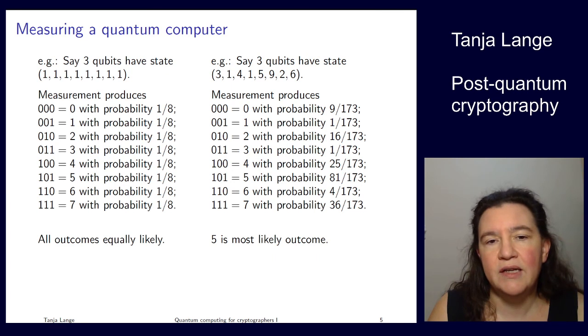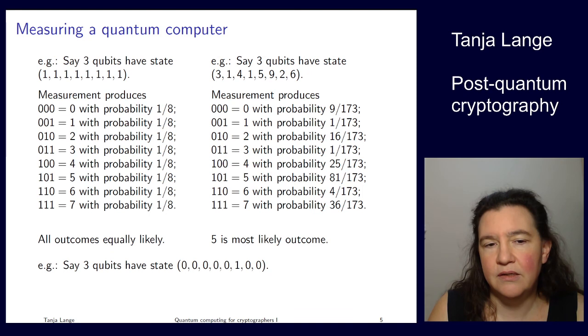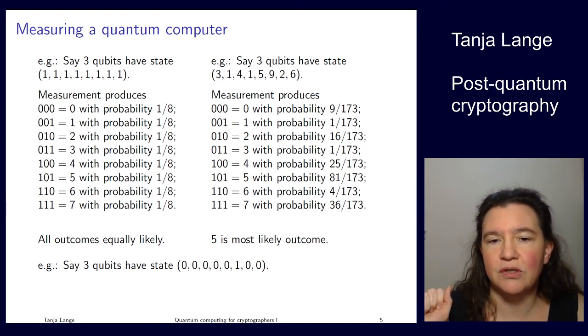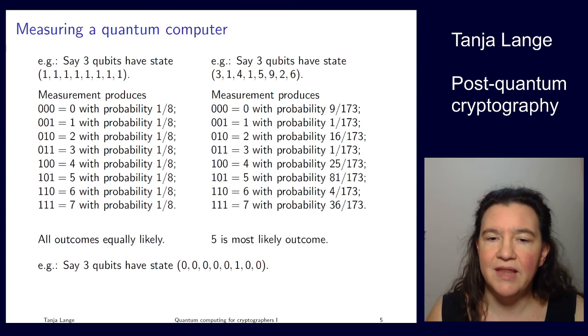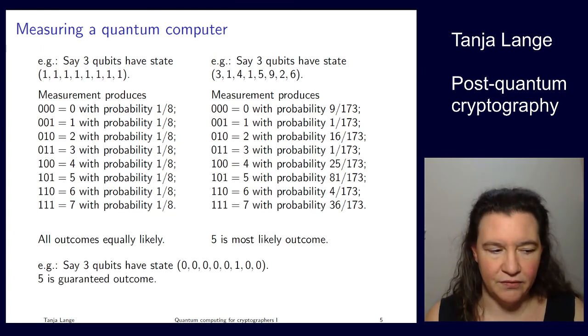And then finally, an example where I'm guaranteed to get an answer. If I have my three qubits, so these eight numbers there, and the first five positions all have zeros, then it's a one in position corresponding to index five, and then a zero and a zero. In that case, I'm guaranteed to measure five.